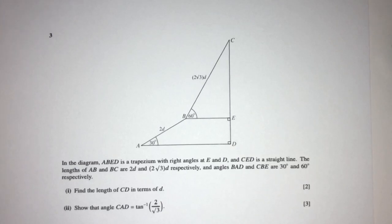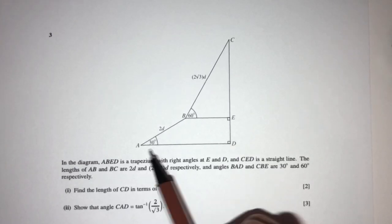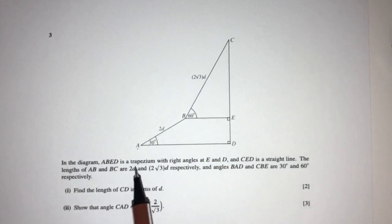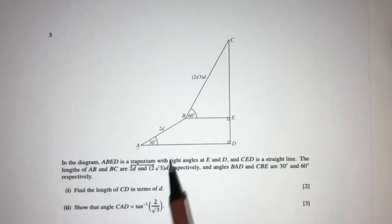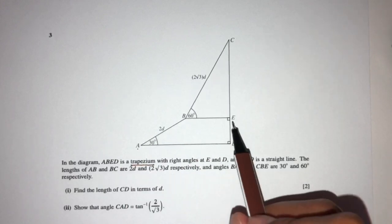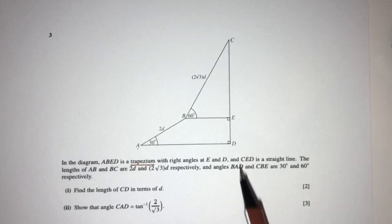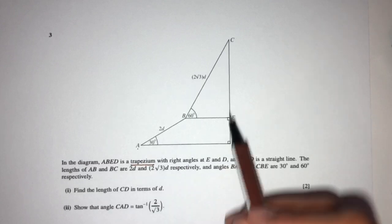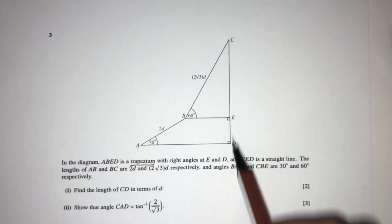Let's move on to the next question. In the diagram, we have ABED. ABED is a trapezium with right angles at E and D. E and D are right angles, and CED is a straight line.